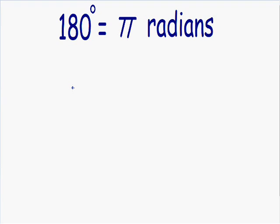In order to convert, the only thing that you need to know is that 180 degrees is exactly equal to an angle of pi radians. That's the only thing that we need to know. So let's get started with an example.